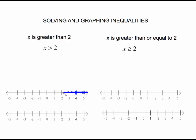How close up to 2 do we go? Well, 2 itself is not part of the solution set. Some books use an open circle right here on 2 to indicate that 2 itself is not part of the solution set, but the very next number greater than 2 is part of the solution set. We can't name the next number greater than 2 — 2.1, 2.01, 2.001, etc. So we use the open circle.